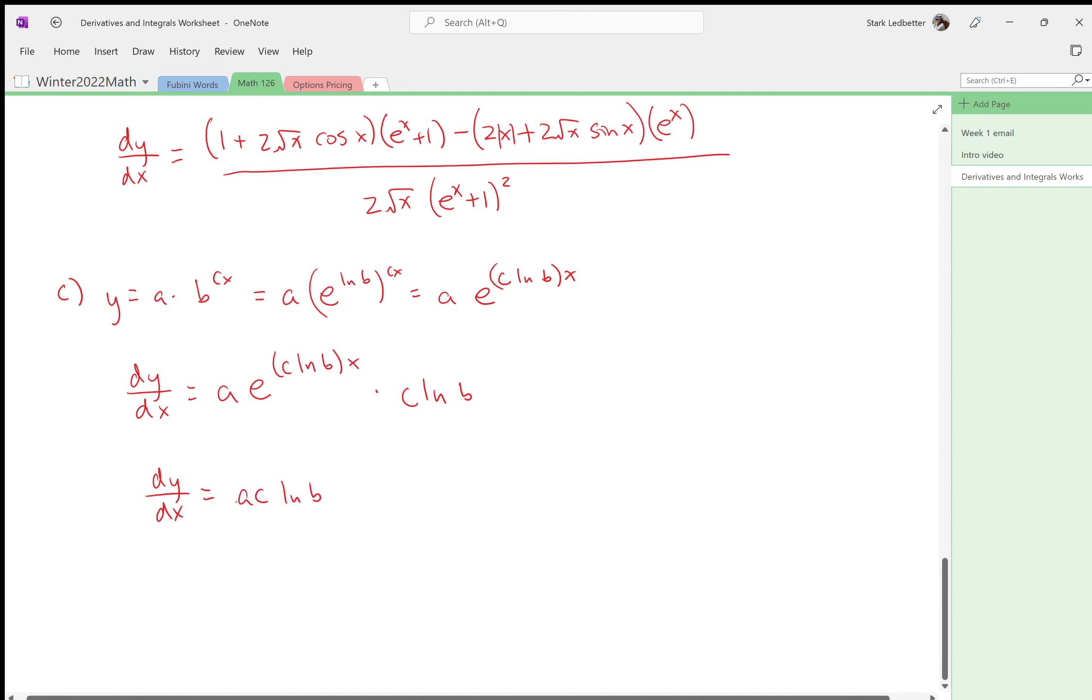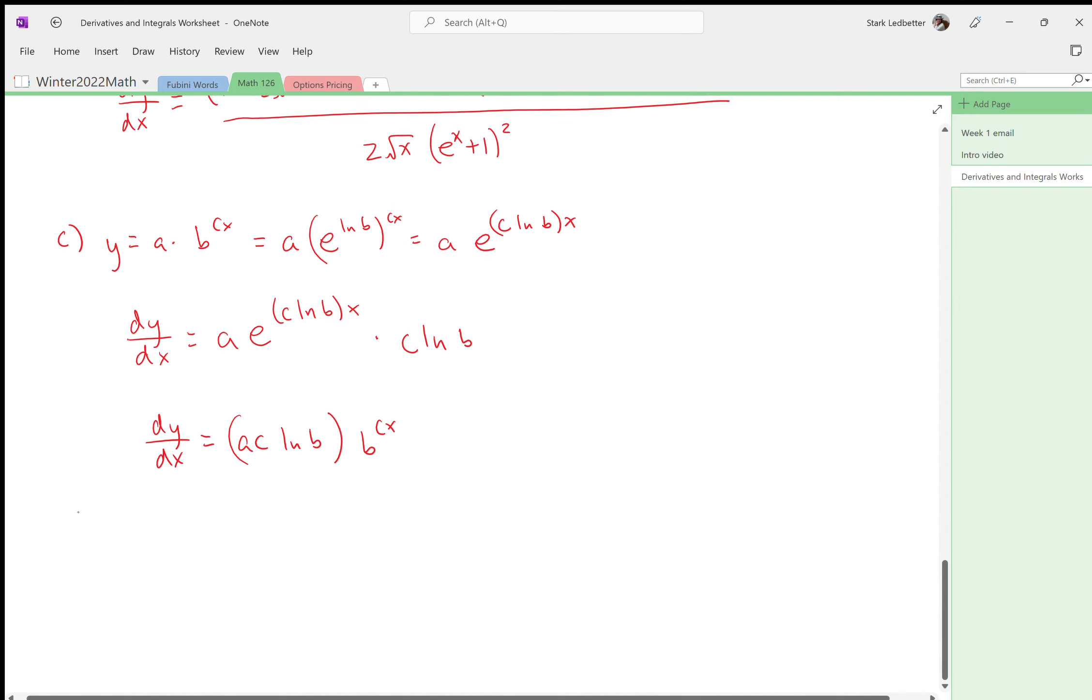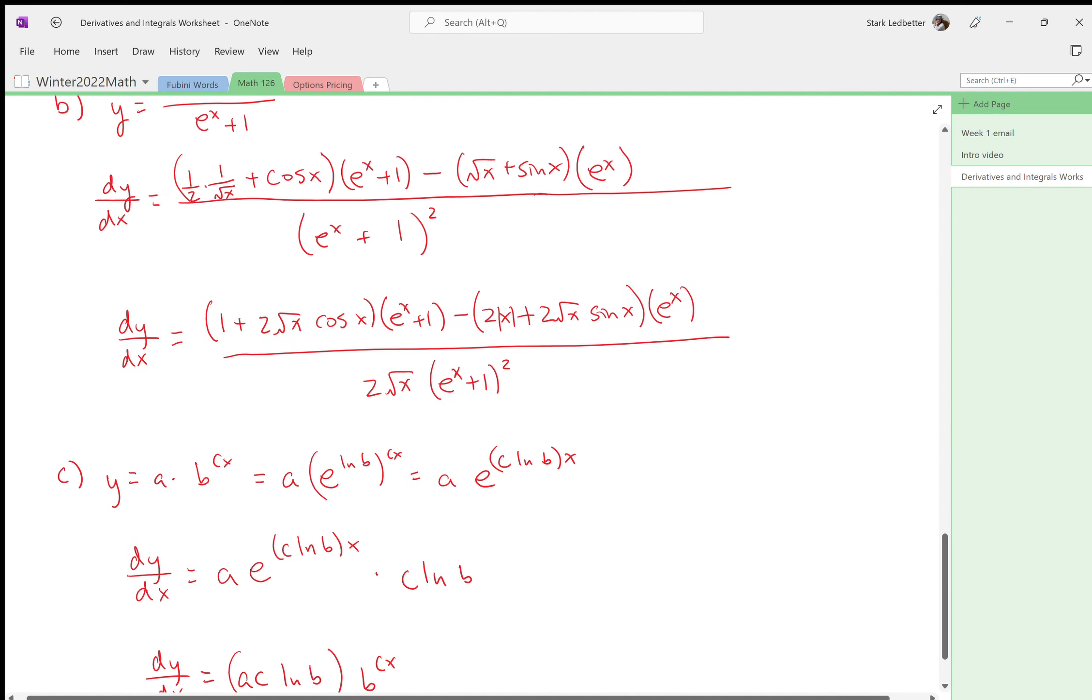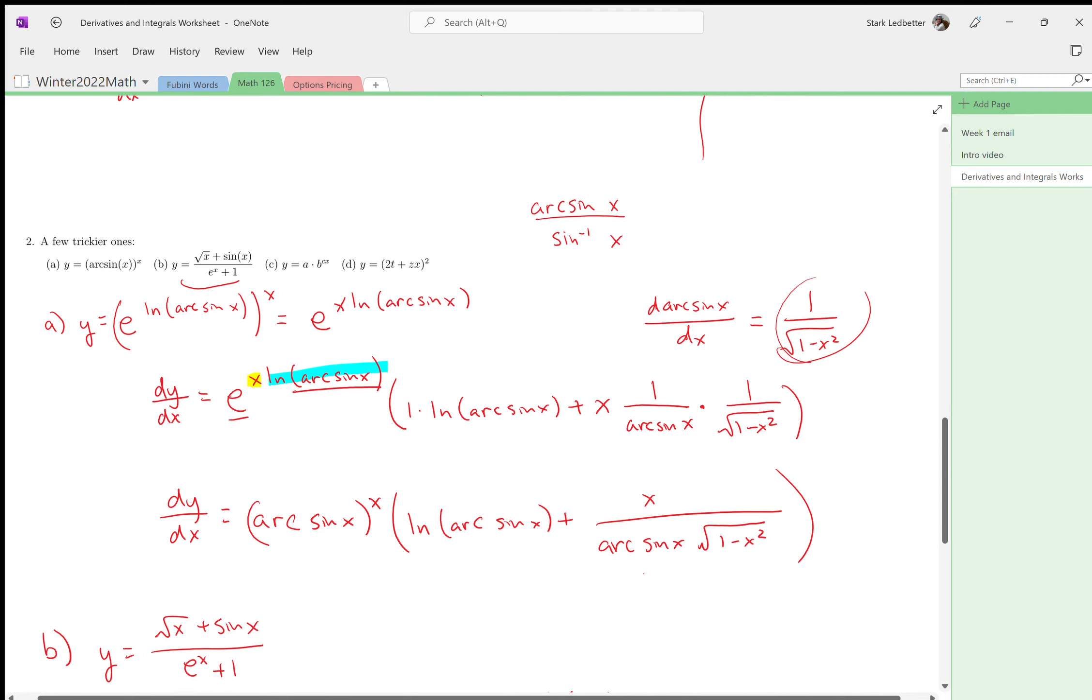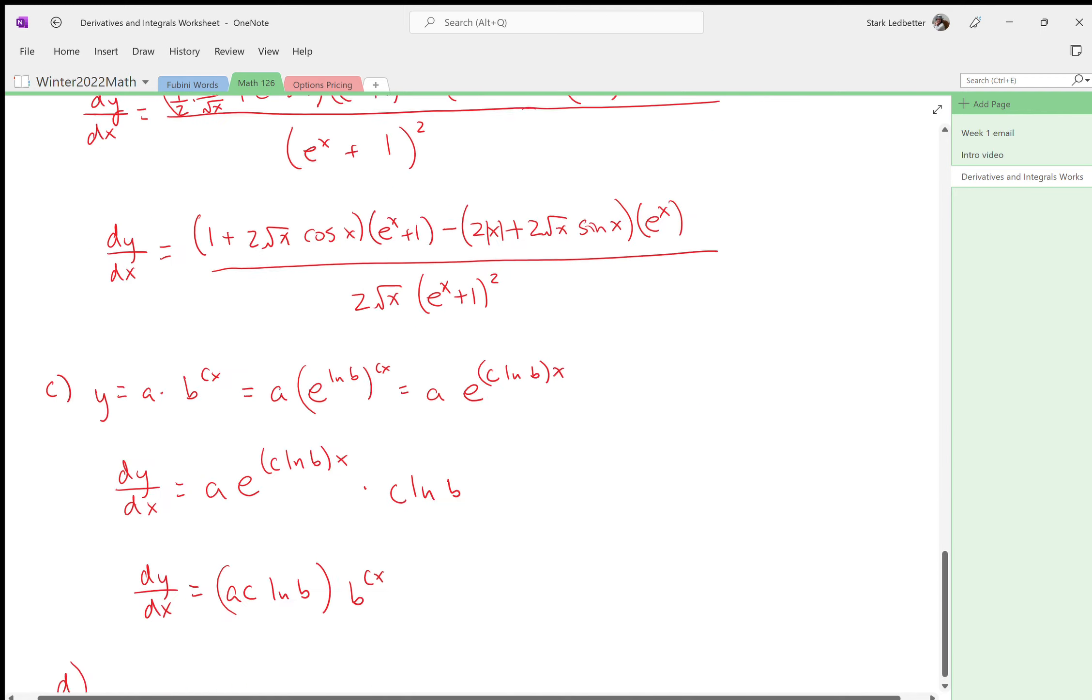And then, as I said the first time I did this, we get a c log b, and then if you could write this again as b to the cx so that it matches the problem, that's a little bit nicer. But if you leave it like that, it's certainly correct, and we won't take points off for that in this class.